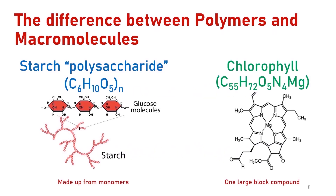So, what is the difference? All polymers are considered to be macromolecules due to their large size and high molecular weight, and all polymers are made of small monomers joined together. For example, starch is a polysaccharide made of linked glucose monomers, whereas macromolecules don't have to be polymers. For example, chlorophyll is a macromolecule with a high molecular weight, and yet it is not considered to be a polymer.